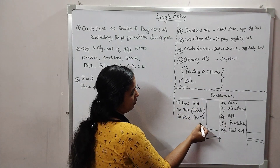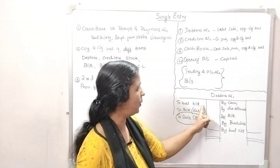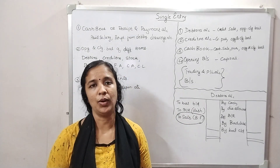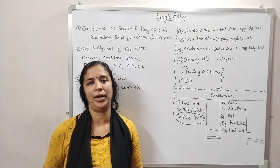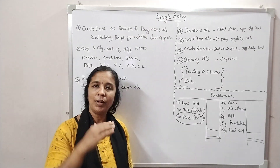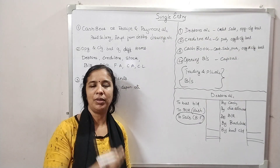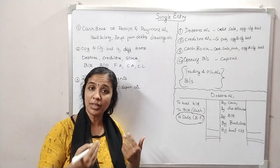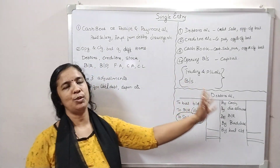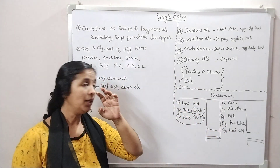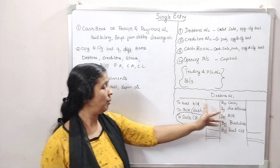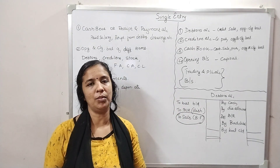We will have sales and balance in the debtors account. For the creditors account, we pay cash to creditors. We pay bills payable and can receive discounts — discount received. Bills payable dishonoured is also a relevant item. These are the items in the creditors account: cash, discount received, and bills payable dishonoured.